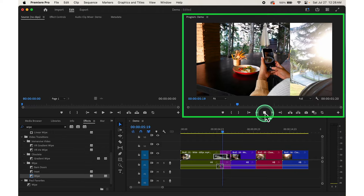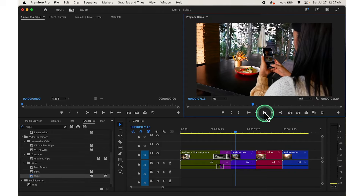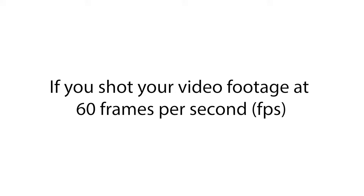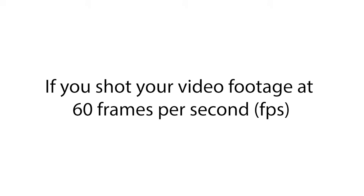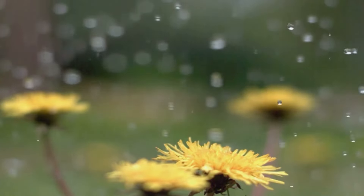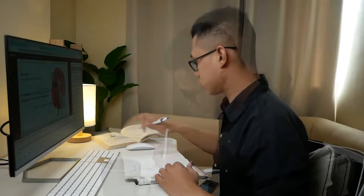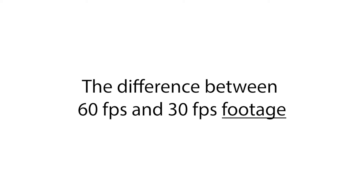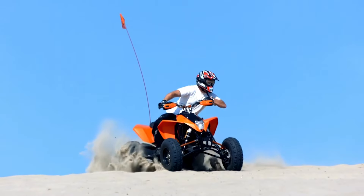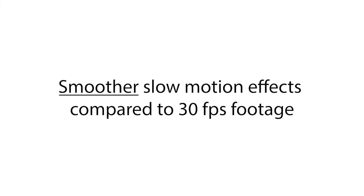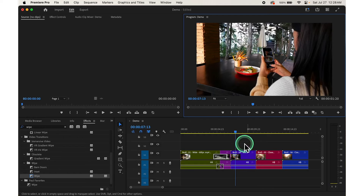Preview the transition by playing through the timeline to ensure it flows smoothly between clips. Now let's add speed effects to make some parts of your video play in slow motion or speed up for added impact. If you shot your footage at 60 frames per second, you can create smooth slow motion effects by changing the speed to 50% or lower. Adjusting the speed to 200% or higher will create a fast motion effect.